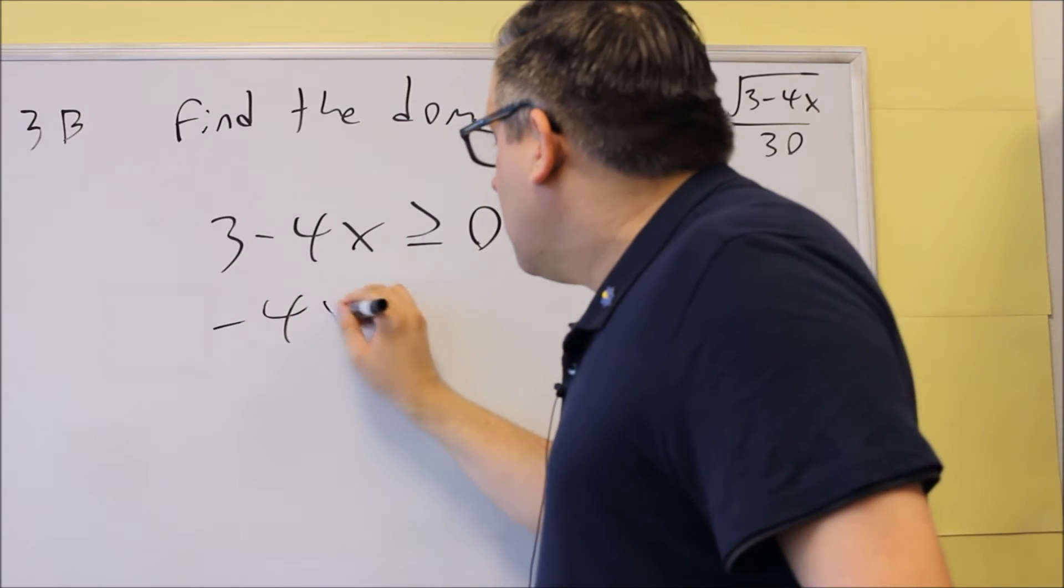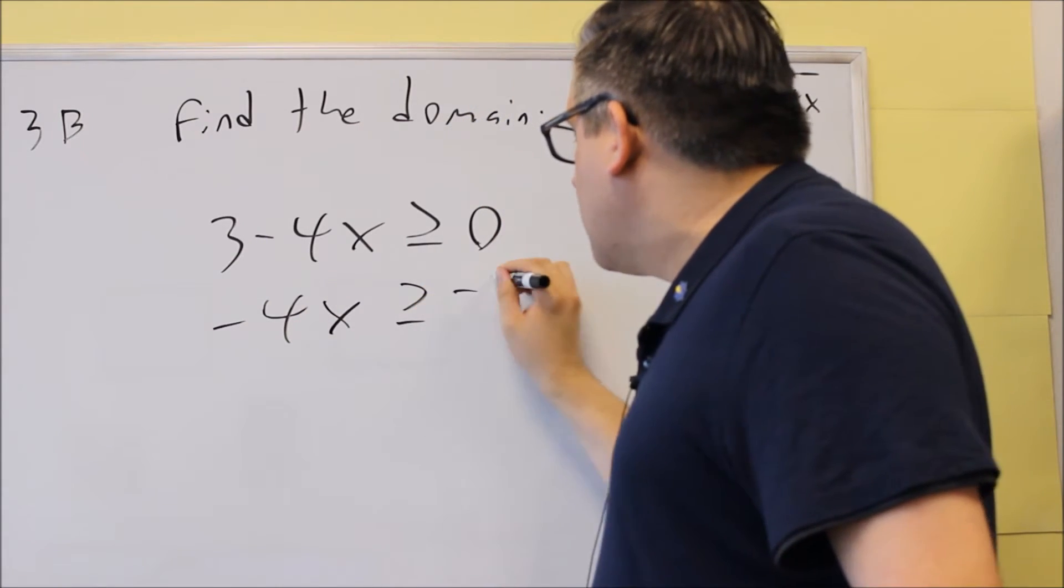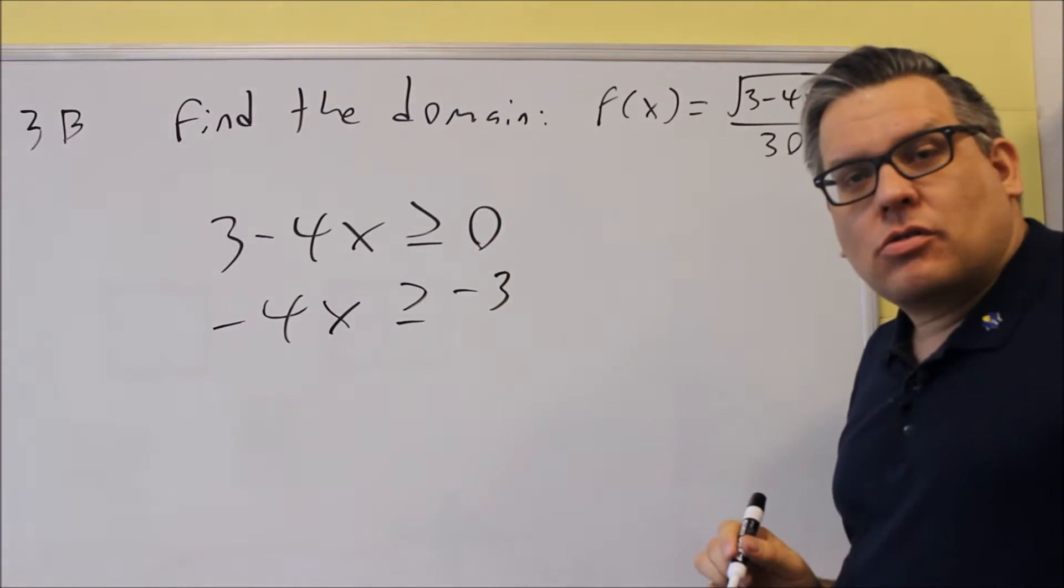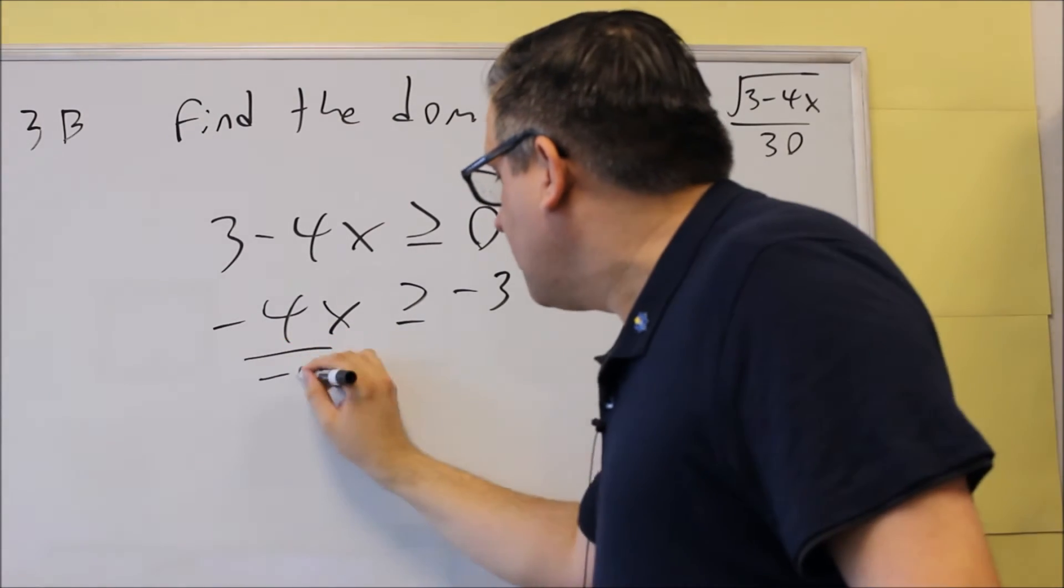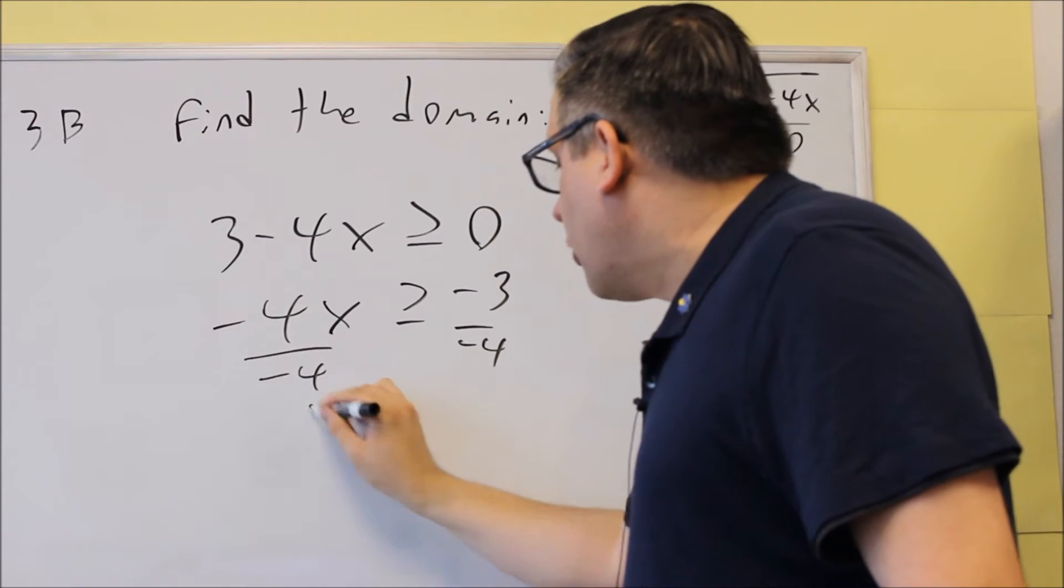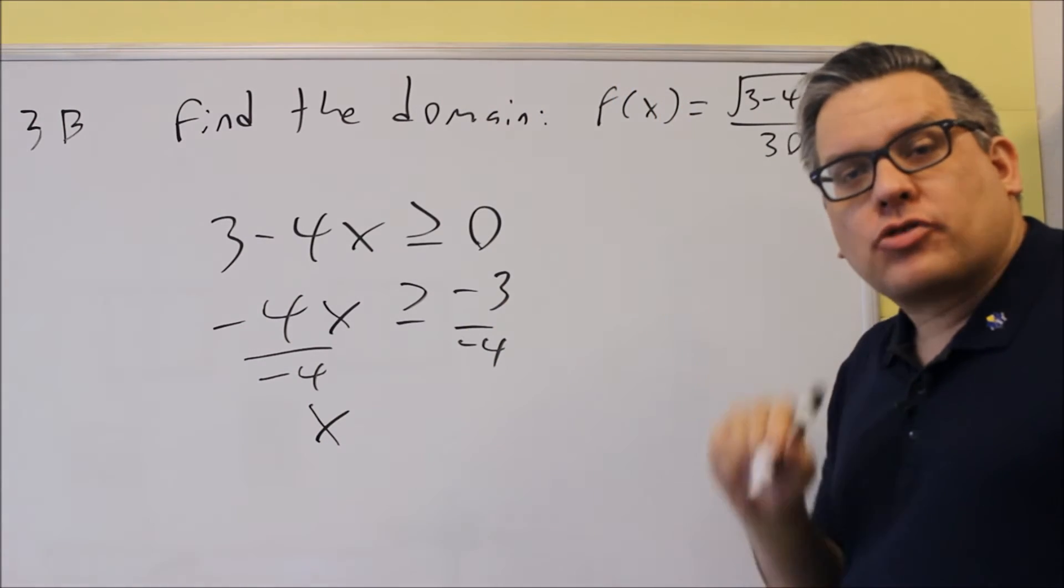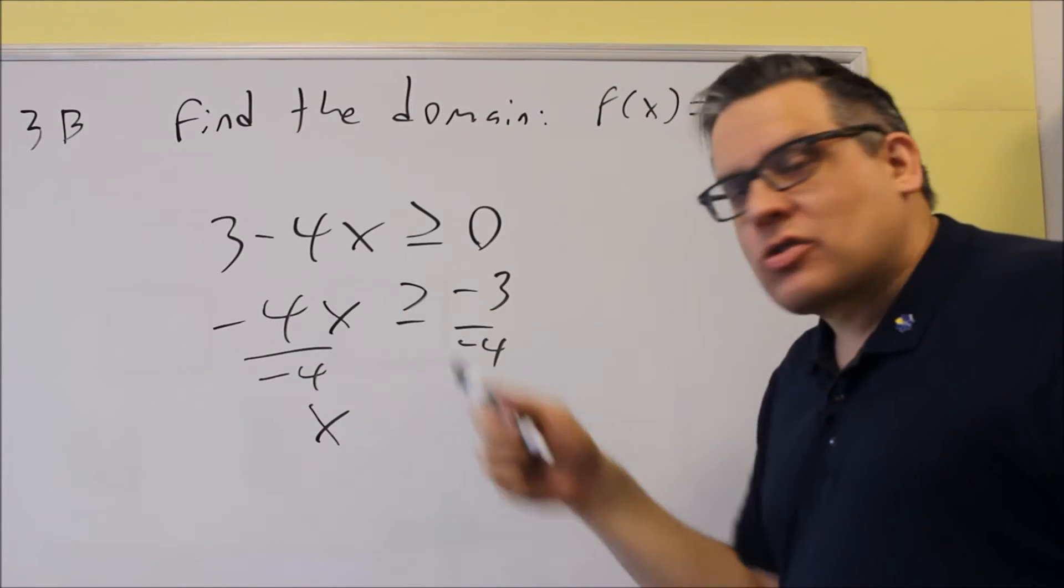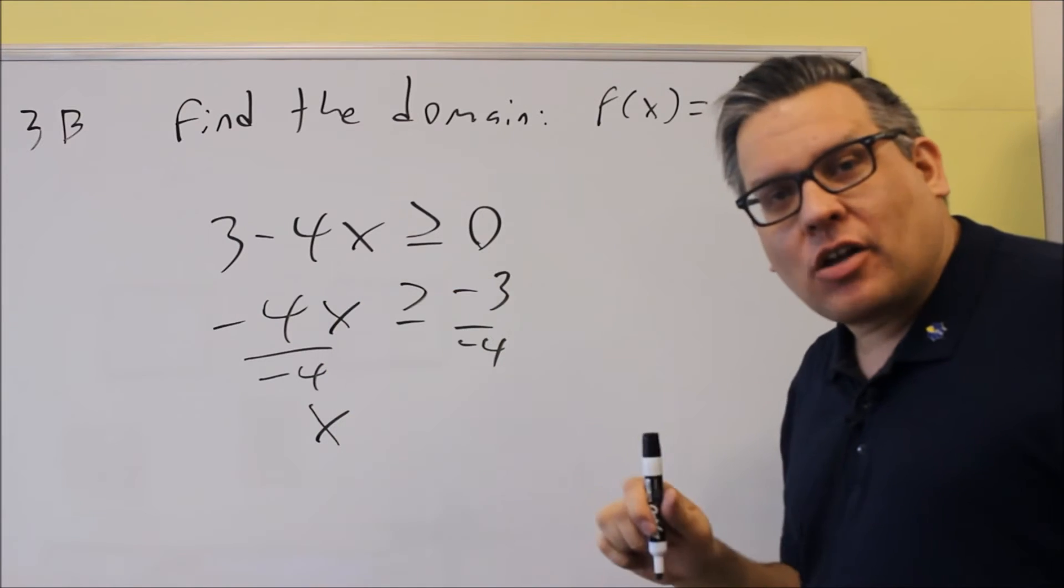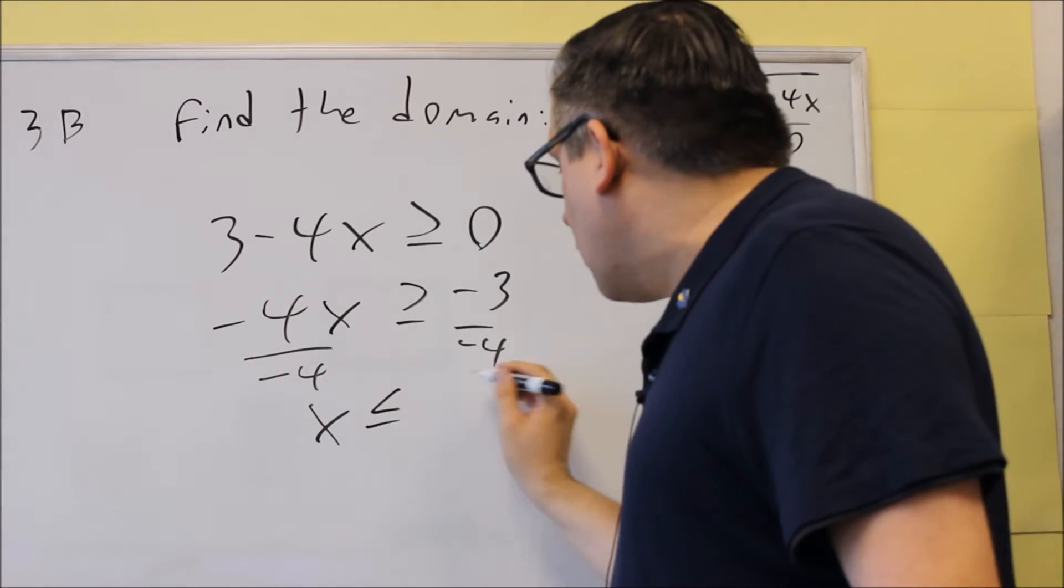Let's solve this. We're going to subtract the 3 from both sides, and we get this. We're going to divide both sides by negative 4. Now, when I do that, whenever you multiply or divide an inequality by a negative, the sign is going to switch directions. So remember, on this particular question, since we're dividing by negative 4, we have to flip the inequality.